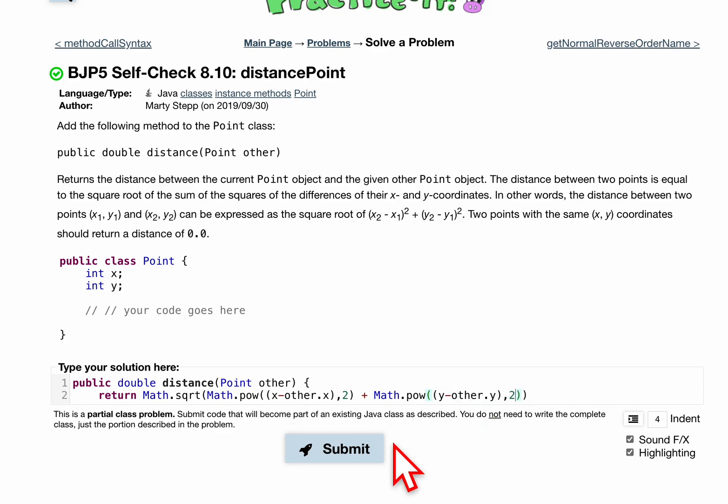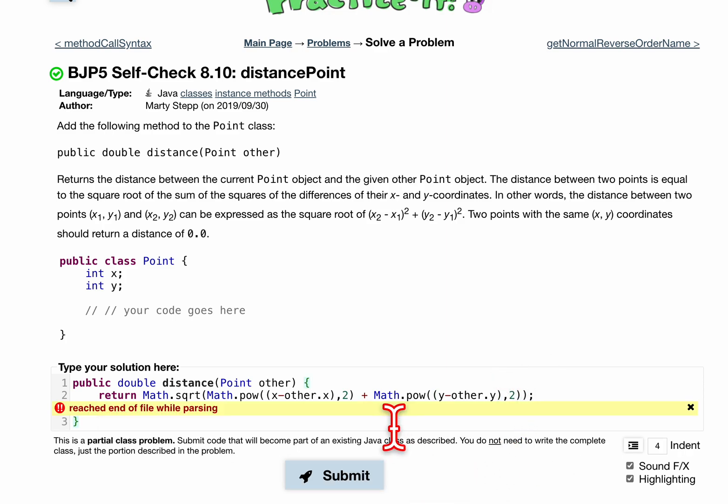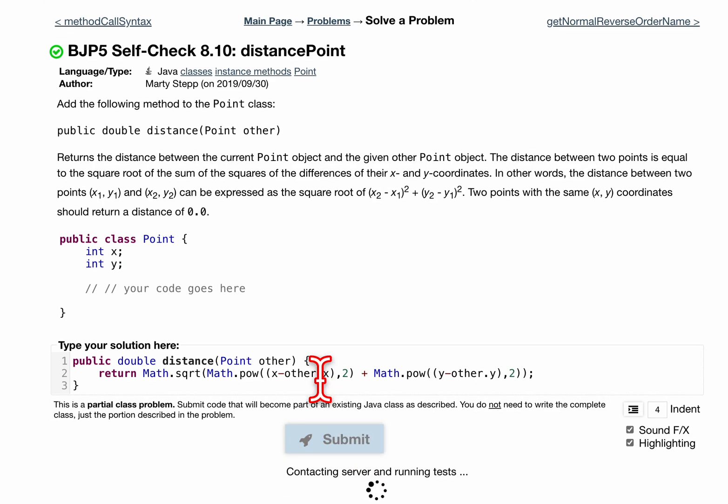So knowing this let's press submit. Let's actually add a semicolon right there first. Let's also finish our method. Let's press submit here.